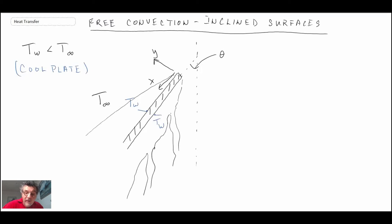On the upper surface, the boundary layer looks very similar to what we've seen before, and consequently we can use our correlations from before. But for the lower surface, we cannot. So that is a schematic for the cool plate.